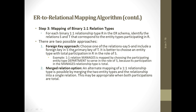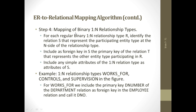For a one-to-one relationship, this can be done in two ways: the foreign key approach and the merged relation option. In the foreign key approach, a foreign key is included in the other relation — for example, the manager's employee number can be included as a foreign key in the department table. In the merged relation option, the two relations can be merged because they are one-to-one.